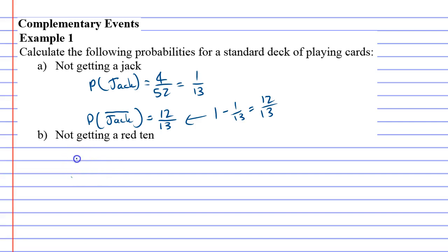So there's two red 10s in a deck of cards, so let's find the probability of getting a red 10 first. There's two of them, the 10 of hearts and the 10 of diamonds, so 2 out of 52, which simplifies to 1 over 26.